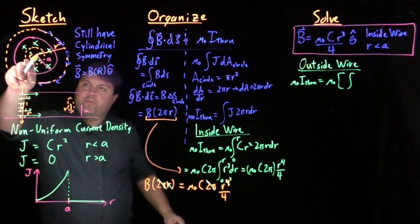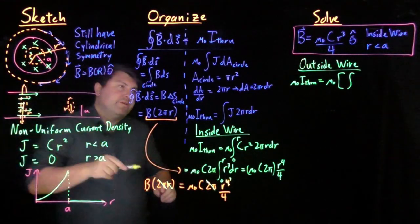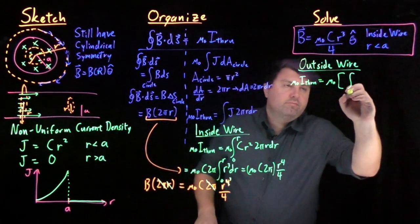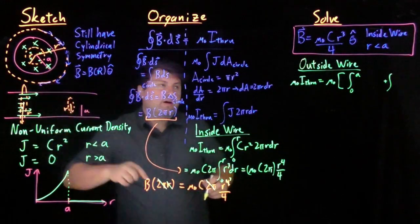But now we have two separate integrals. Because as we go from the center all the way out, we go from one region from 0 to a, and another region from a to r.